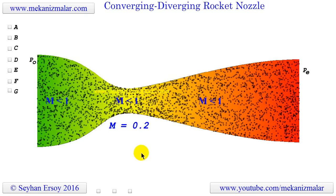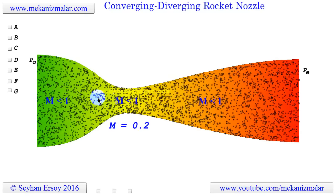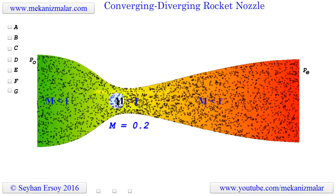We know from the Venturi effect that when the gas is in the converging section, the pressure drops and velocity increases, as seen in this animation.